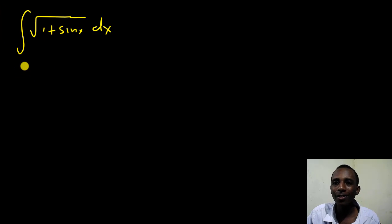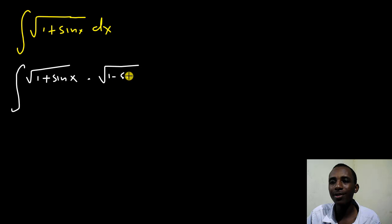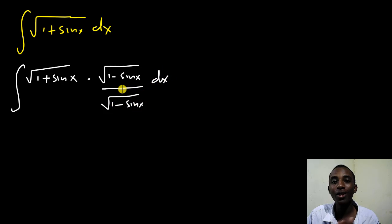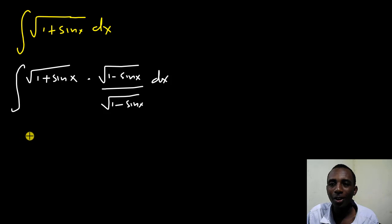I'll write this as the integral of the square root of 1 plus sine x, and I'm going to multiply this by the square root of 1 minus sine x, both the numerator and denominator of course. This does not change the meaning of the original integral, but it's helpful because it's going to help us create a function and a derivative.